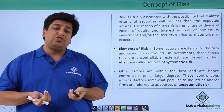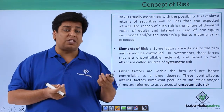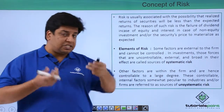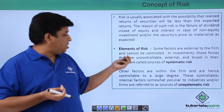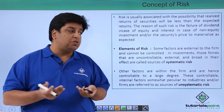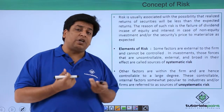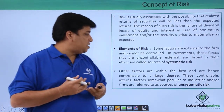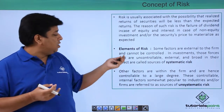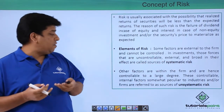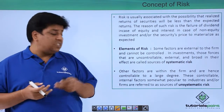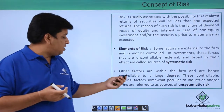Now we need to understand what the elements of risk are. Generally, the elements of risk can be classified into two broad categories: systematic risk and unsystematic risk. Some factors are external to the firm and cannot be controlled — for example, interest rates and the purchasing power of a person. These cannot be controlled by the firm, so this kind of risk is known as systematic risk. Forces that are uncontrollable, external, and broad in their effect are called sources of systematic risk.